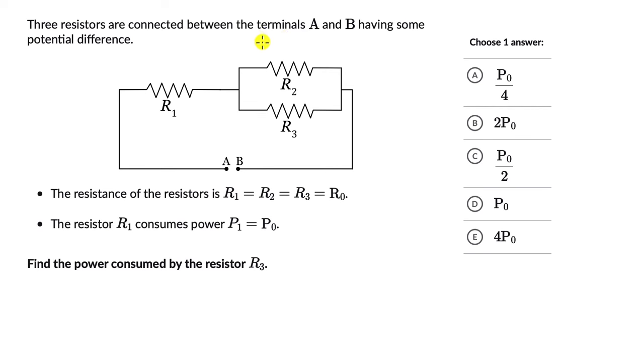Three resistors are connected between the terminals A and B having some potential difference. We know the resistance of the resistors R1 which is equal to R2 equal to R3 that is equal to R0.